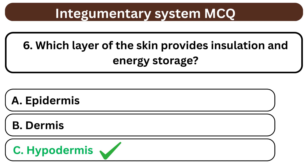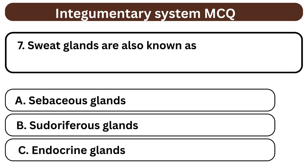Question 7. Sweat glands are also known as A. Sebaceous glands. B. Sudoriferous glands. C. Endocrine glands. The answer is B. Sudoriferous glands.